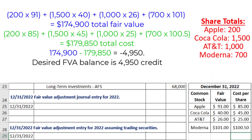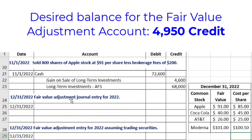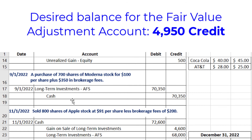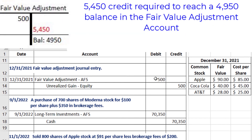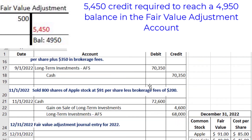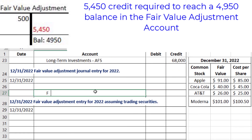The work for finding the balance of the fair value adjustment account is shown. The desired balance is a $4,950 credit for the fair value adjustment. Since we already had a $500 debit balance from the previous year's entry, to get to a $4,950 credit balance we need to credit the account by $500 plus $4,950, which equals $5,450. So we credit the fair value adjustment AFS account for $5,450.